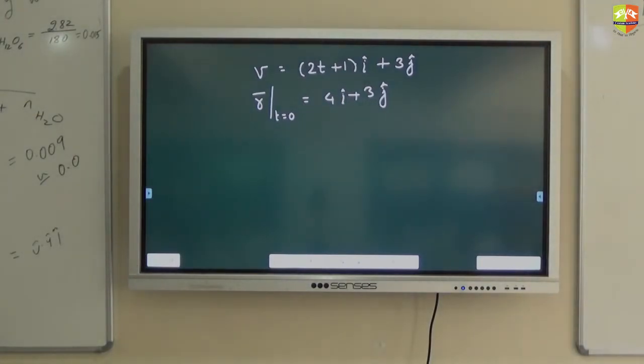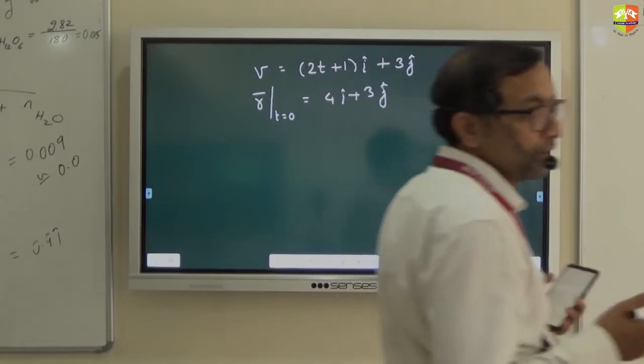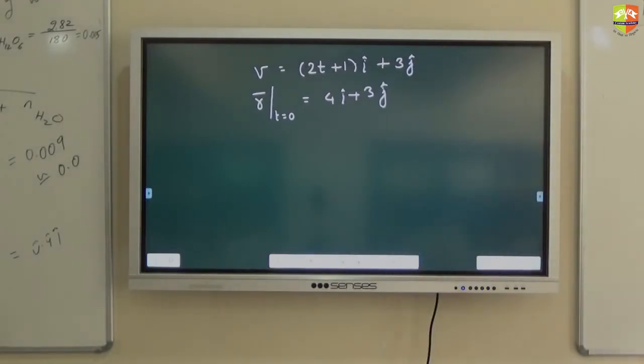Velocity is given. And t equal to 0. The position is given. You need to find out the equation of the path of the particle. Relation between x and y. Equation of the path you find out.